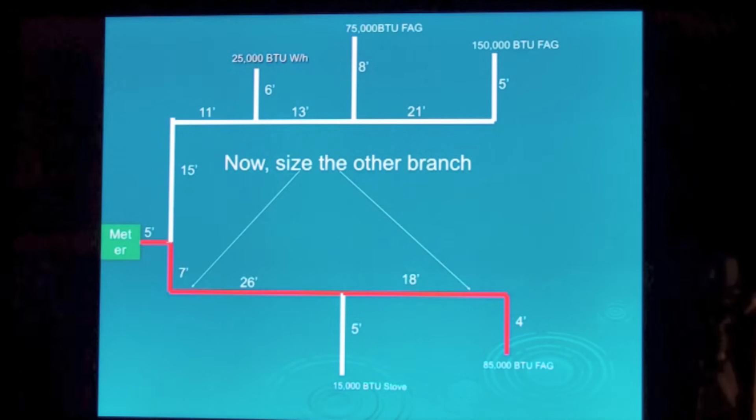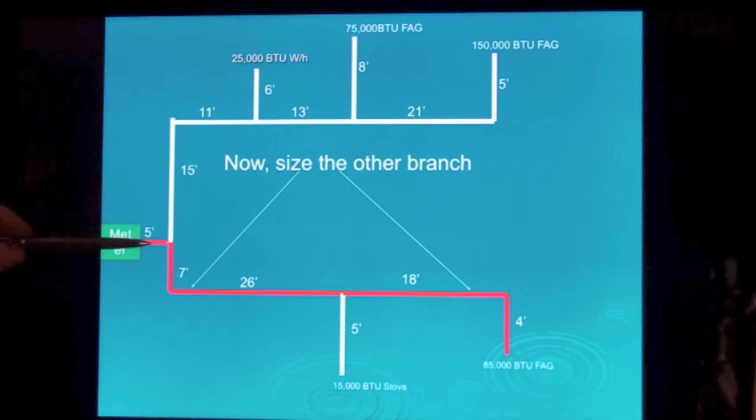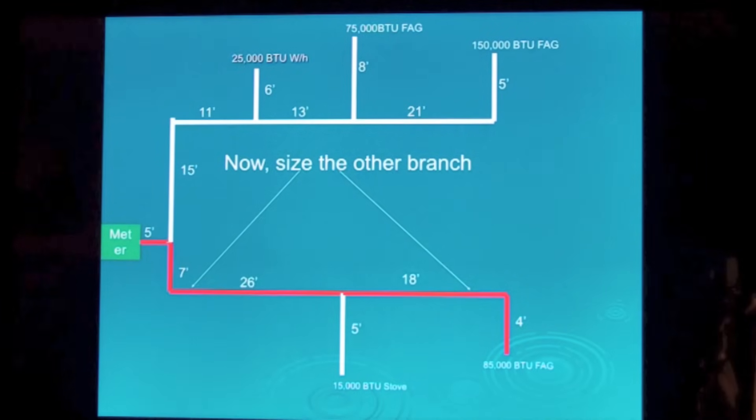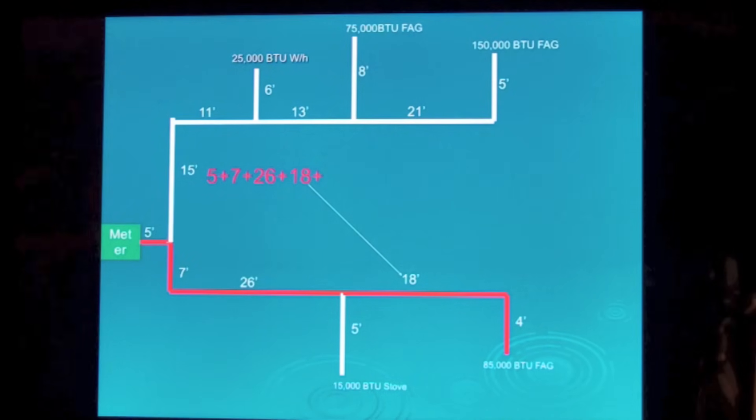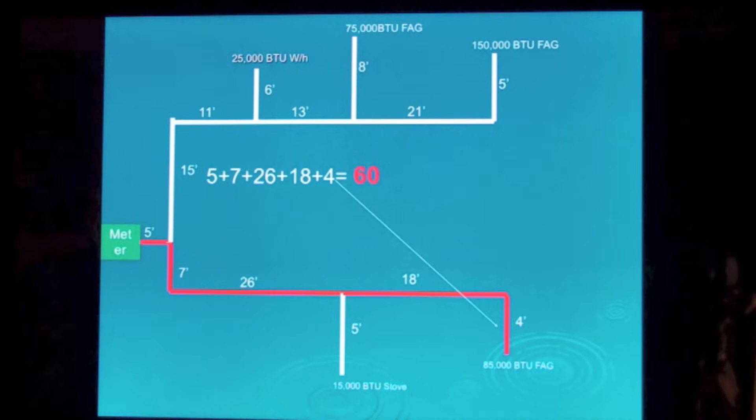Next, we're going to size the other branch. Now when you're sizing these branches, remember that five foot piece in there you had. That's always got to be added in. So let's add that together. The five and the seven, 26, 18, and the four. 24 equals 60.